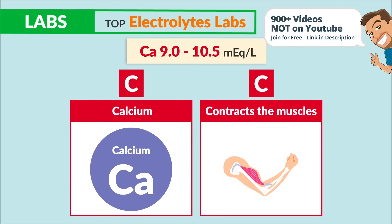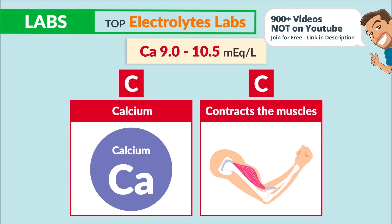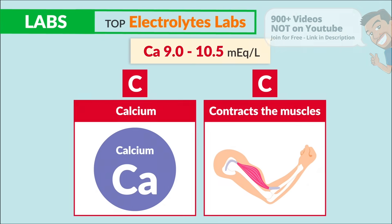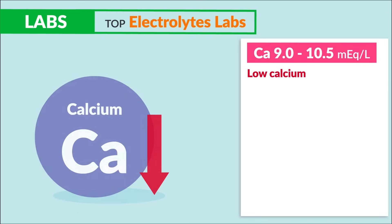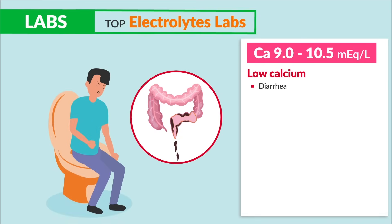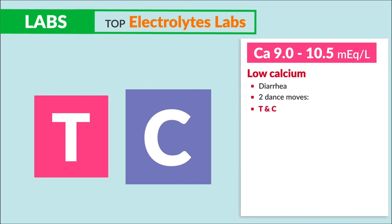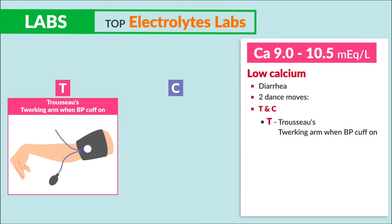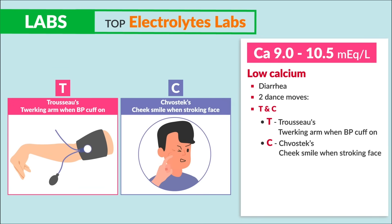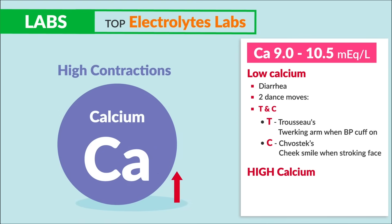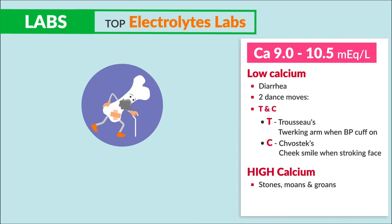Next up is calcium, normal range 9.0 to 10.5. Think double C's: calcium contracts muscles with smooth contractions. For low calcium, we have diarrhea — not-so-smooth GI contractions — plus two clinical signs: Trousseau's sign, a twitching arm with a BP cuff, and Chvostek's sign, a cheek smile when stroking the face. For high calcium: stones, moans, and groans — kidney stones and constipation.